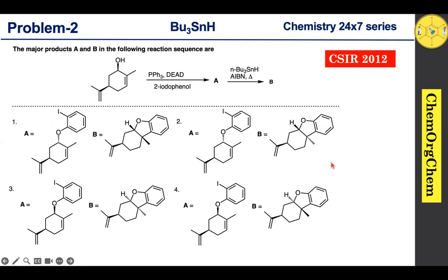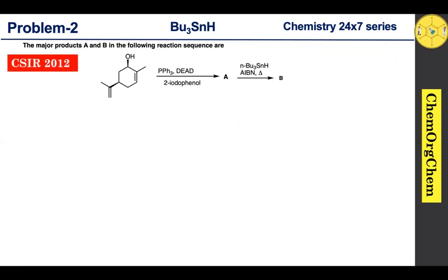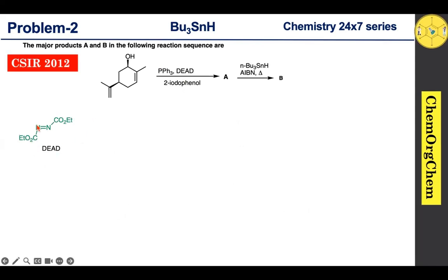Let's look at the first reaction condition, which involves triphenylphosphine and diethyl azodicarboxylate. In diethyl azodicarboxylate, each nitrogen atom is bonded to an ester group, making both nitrogen atoms electron-deficient. Triphenylphosphine is electron-rich — it contains phosphorus with a lone pair of electrons.